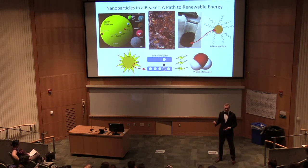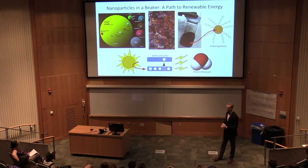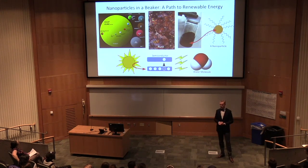In conclusion, I think it's really neat that you can use three very abundant resources on earth — rust, sun, and water — to solve the world's energy crisis. Thanks.